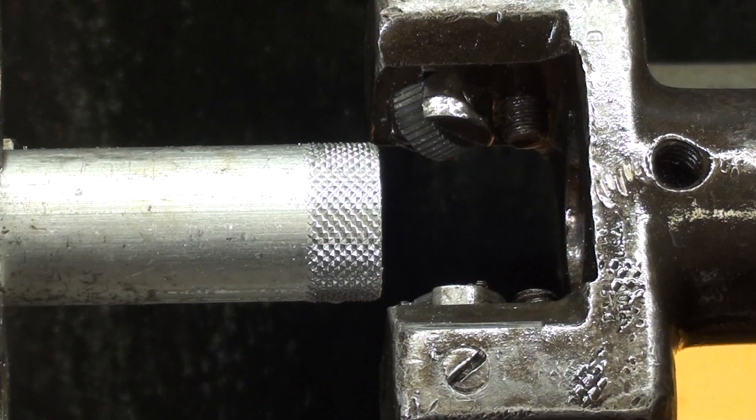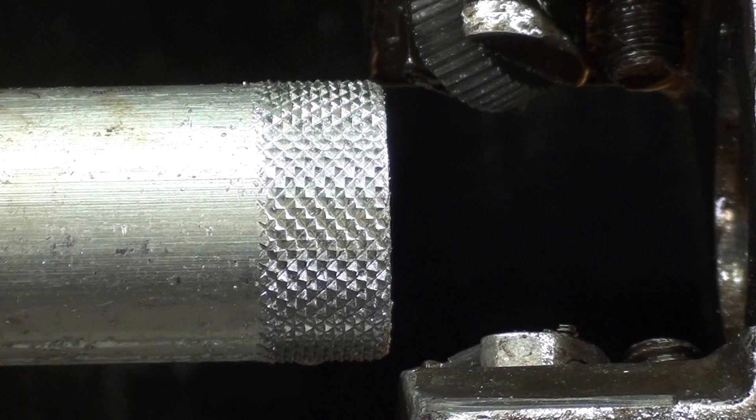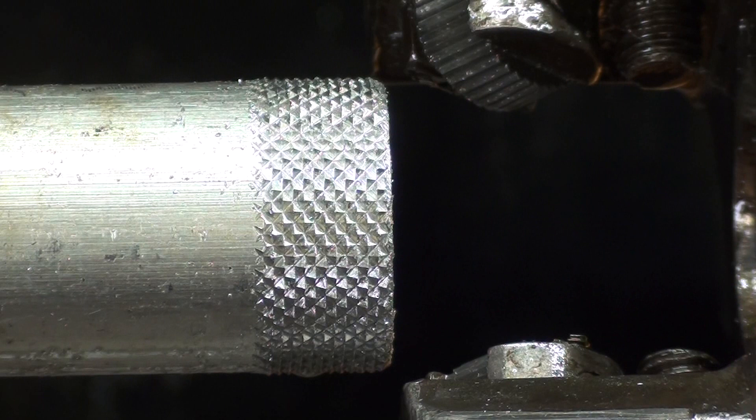Okay, that knurl is absolutely perfect, as you can see, diamond shaped. So the setting is perfect here, and the knurl is perfect.